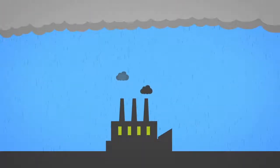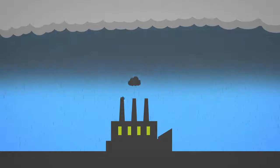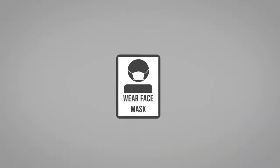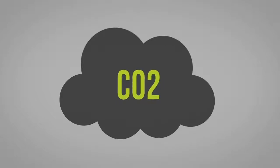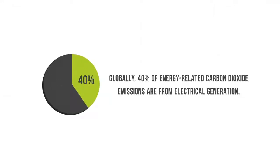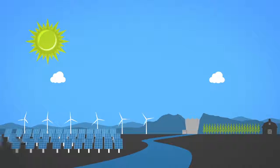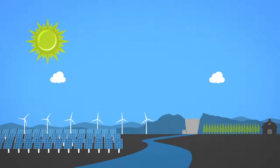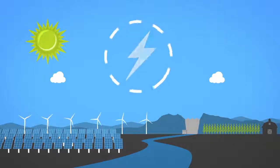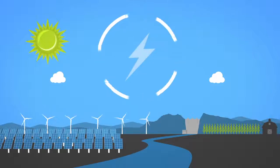Depending on the electricity source there can also be environmental challenges. Air pollutants can cause significantly harmful negative health impacts. Greenhouse gas emissions are also an issue. Globally 40% of energy related carbon dioxide emissions are from electrical generation. Renewable sources of electricity like solar and wind produce zero direct carbon emissions but generate electricity on an intermittent or inconsistent basis.